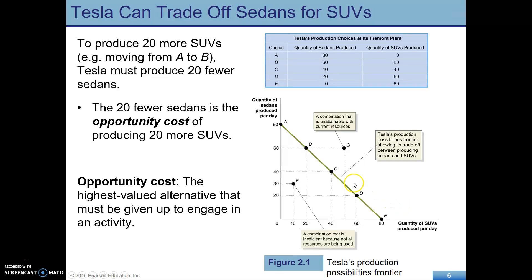Here's where the trade-offs come in. In order to move from A to B, Tesla faces a trade-off. At A, we are at 80 sedans and zero SUVs. If they want to produce 20 SUVs, they're going to have to give up some sedans. To go from 80 sedans to 60 sedans and 20 SUVs, they're giving up 20 sedans to produce 20 SUVs — a one-to-one trade-off. For every sedan they give up, they get one additional SUV. In the language of opportunity cost — the highest valued alternative given up — those 20 fewer sedans are the opportunity cost of producing 20 more SUVs.